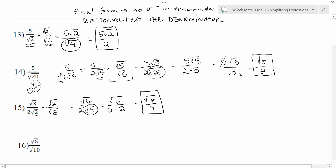Always double-check your radicals. Here I have the square root of 6, and 6 is just 2 times 3 — there are no pairs, so I can't simplify that radical anymore. Also check: can I simplify my fraction? Notice we cannot simplify the 6 and the 4 because one is inside the square root and the other is not — that means they're off limits for combinations.